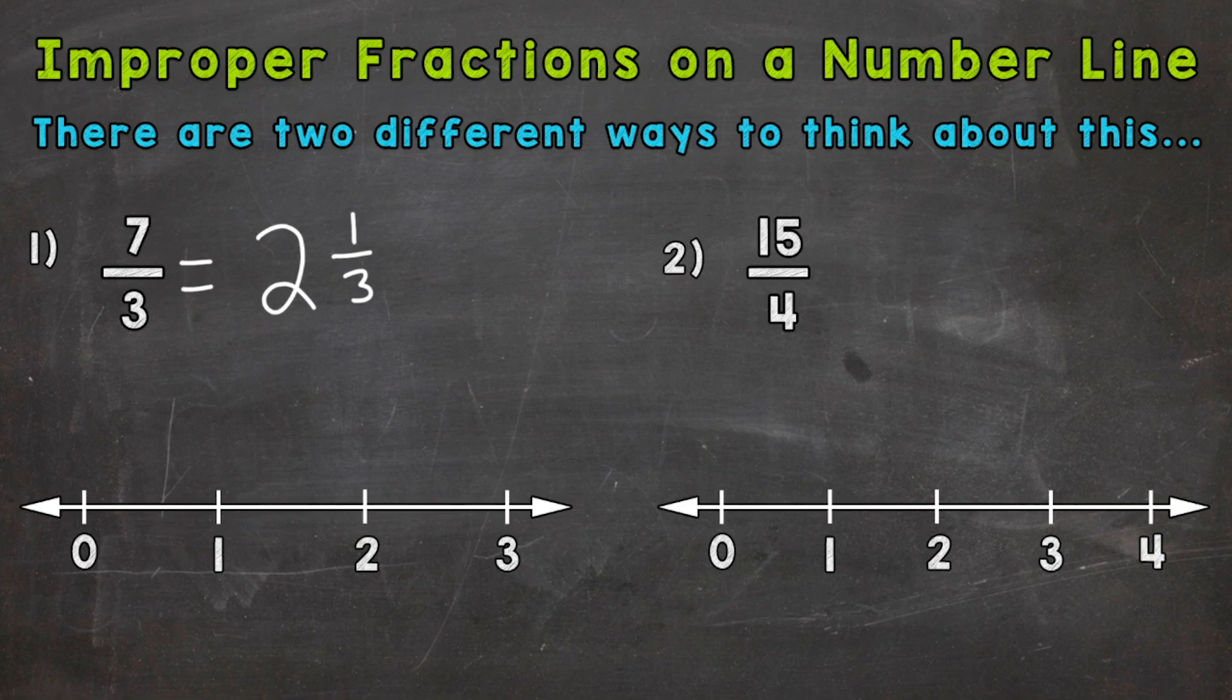So now that we have the equivalent mixed number, it's going to be easier to place that on a number line. So we know two and one third is going to be between two holes and three holes. So this portion of the number line. So we need to split that into thirds or three equal sections. Because of our denominator, we have two plus that one third. So let's split into thirds here. And this mark here is two and one third.